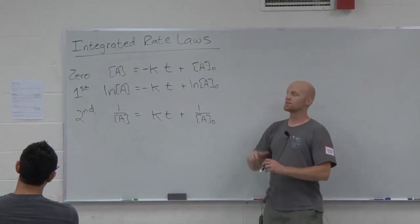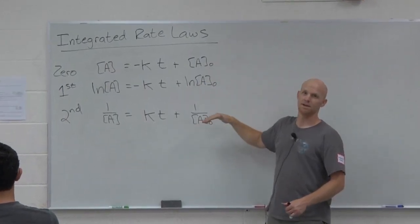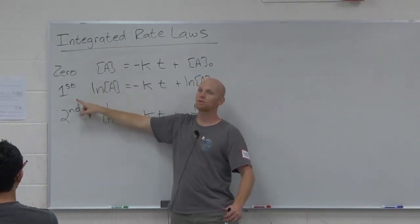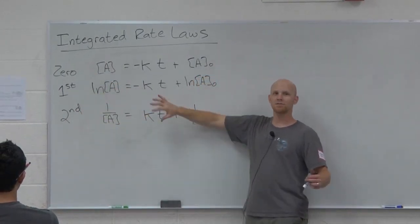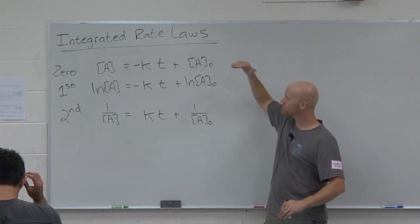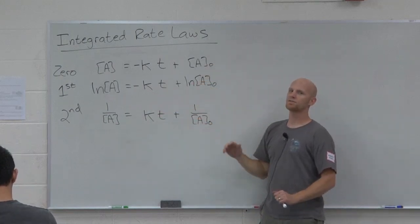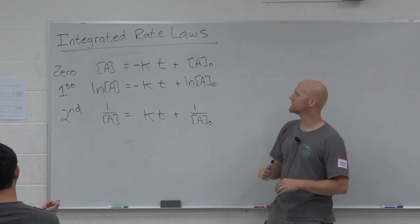Depending on if it's a reactant, depending on what order it is, it follows a different mathematical equation. These are going to be given to you on the front of your exam, and they'll even be labeled as zero, first, and second. In fact, they may be given in a couple of different forms. I've given them to you in slightly different forms than what's on your sheet, and I did that for a reason, as we'll see in a minute.